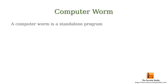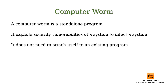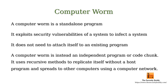A computer worm is a standalone program. It exploits security vulnerabilities of a system to infect it, and after infecting a computer, it uses the infected computer as a host and scans and infects other computers on the network. It does not need to attach itself to an existing program — it is an independent program or code chunk that uses recursive methods to replicate itself and spreads to other computers using a network.